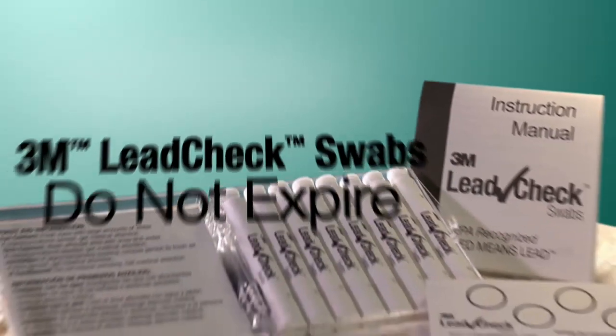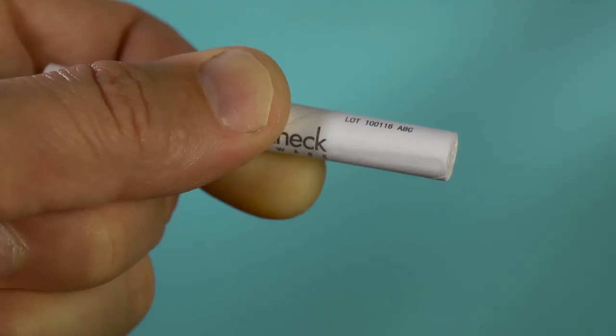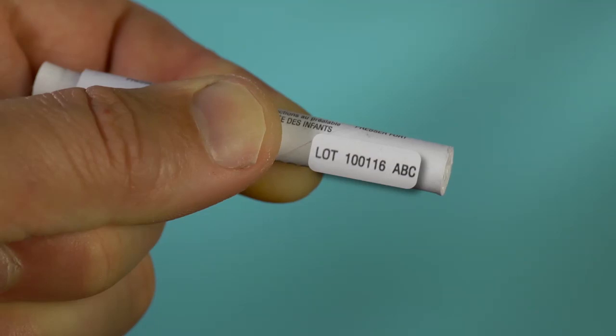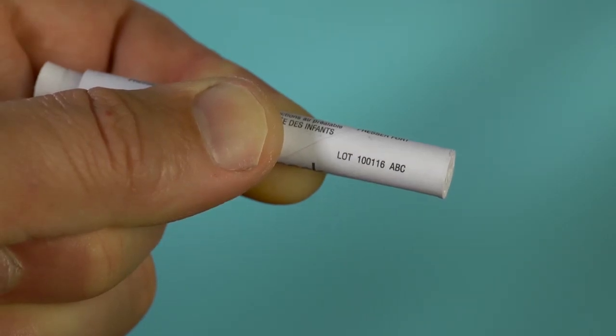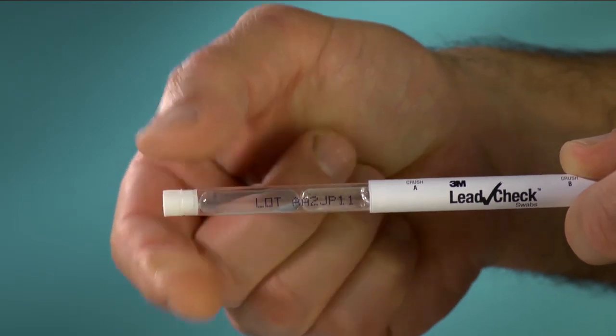3M Lead Check swabs do not expire, so when filling out the EPA form, use the lot number shown on the swab in the expiration date field. The lot number can be found on the cardboard cover or on the plastic tube underneath the cardboard cover.